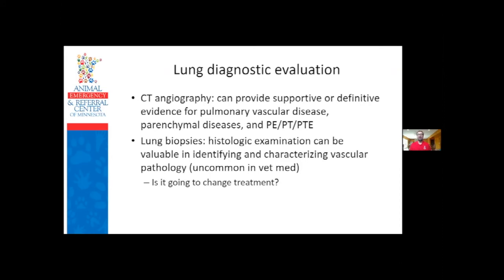For investigating underlying causes: CT angiography can be helpful - CT helps evaluate pulmonary parenchyma better than chest x-rays alone, and the angiography helps evaluate whether pulmonary arteries are blocked by clots. Lung biopsies give a more definitive diagnosis of what the lung disease is, though at this point in veterinary medicine that probably won't necessarily change our treatment options. As time goes on and we learn more, a specific diagnosis may point to specific therapies. But taking a dog having difficulty breathing and cutting off some of their lungs is a drastic step if it won't change what we're going to do.